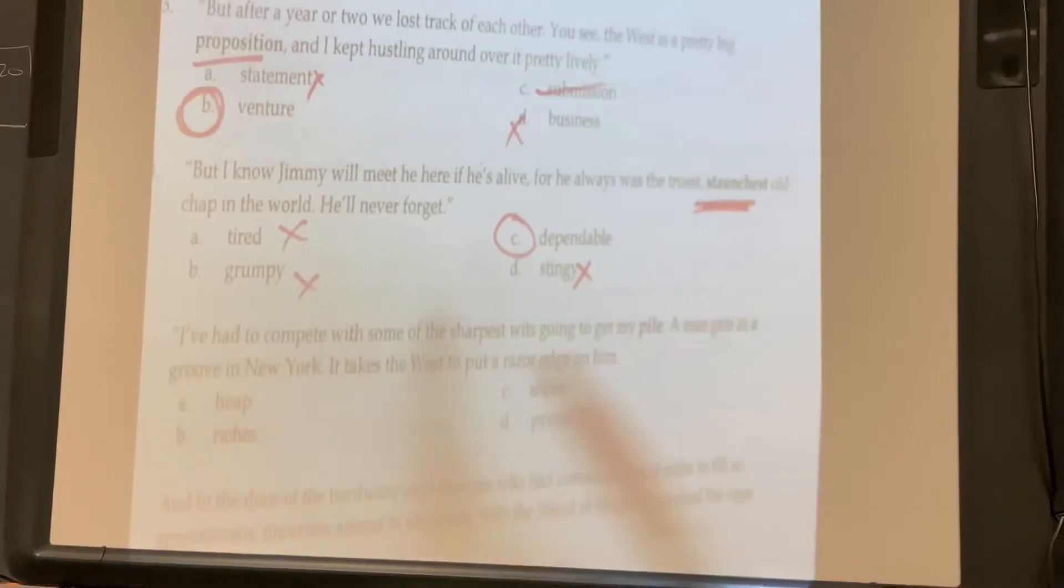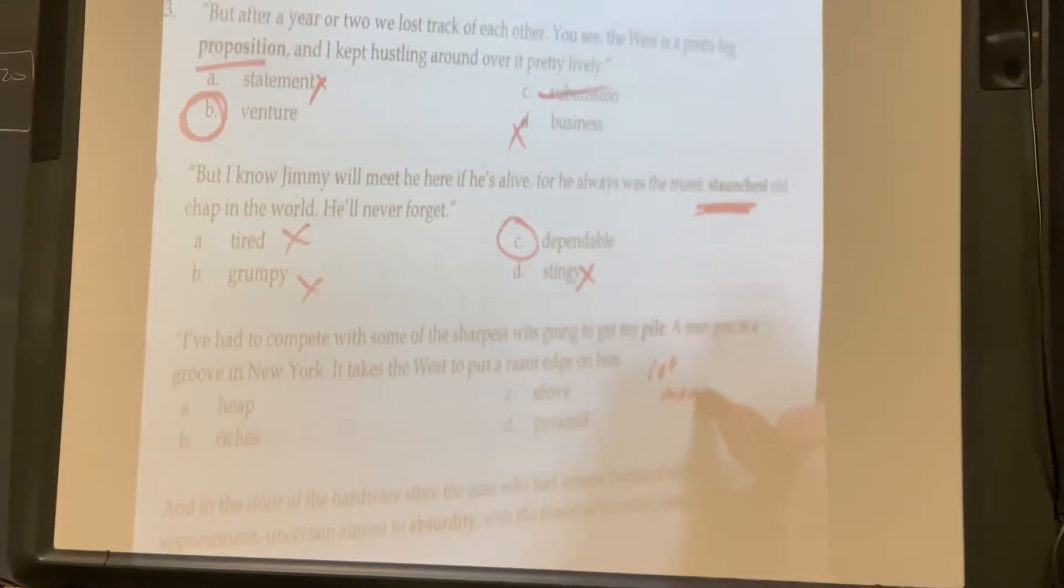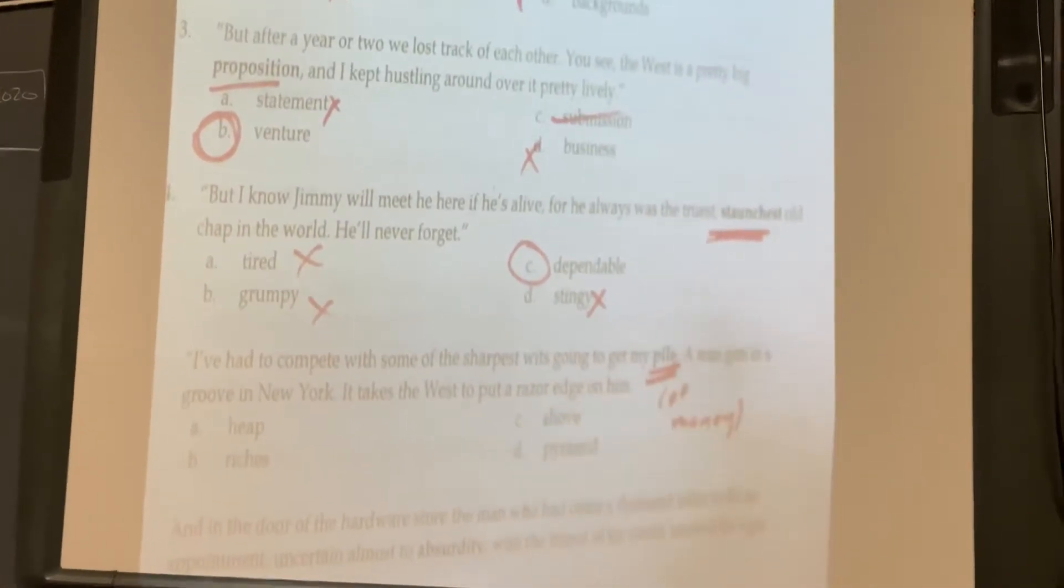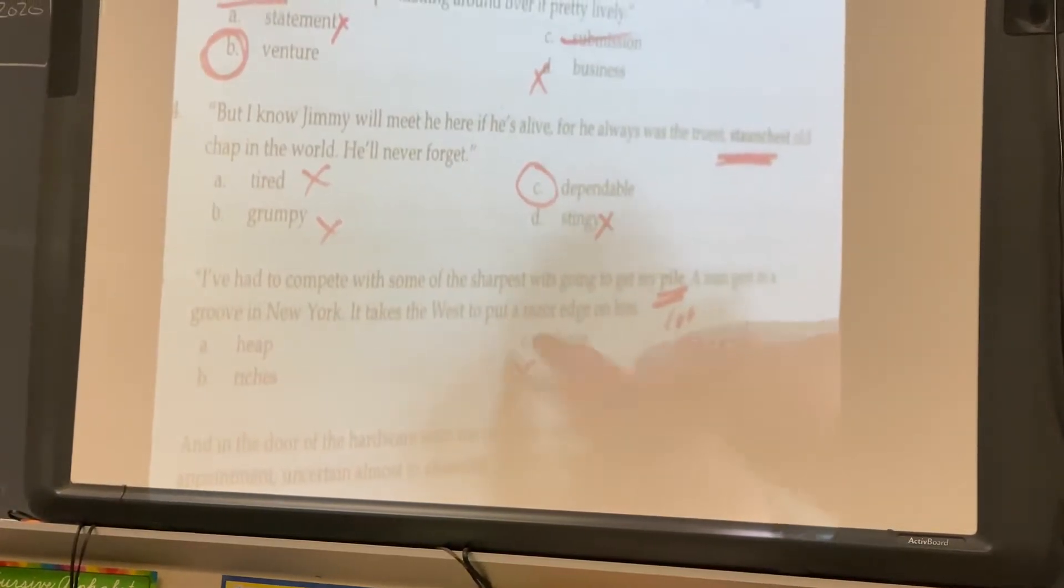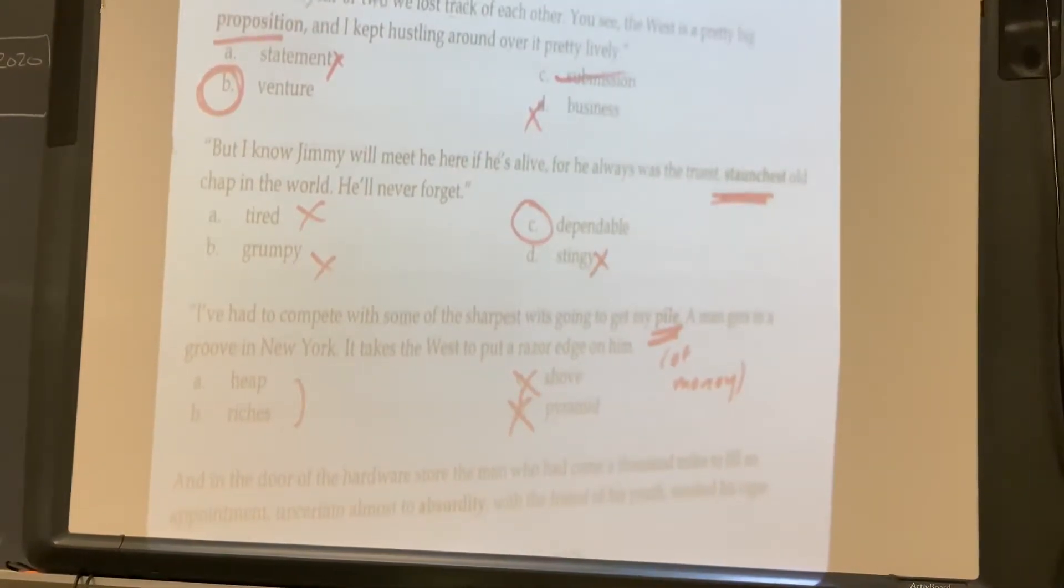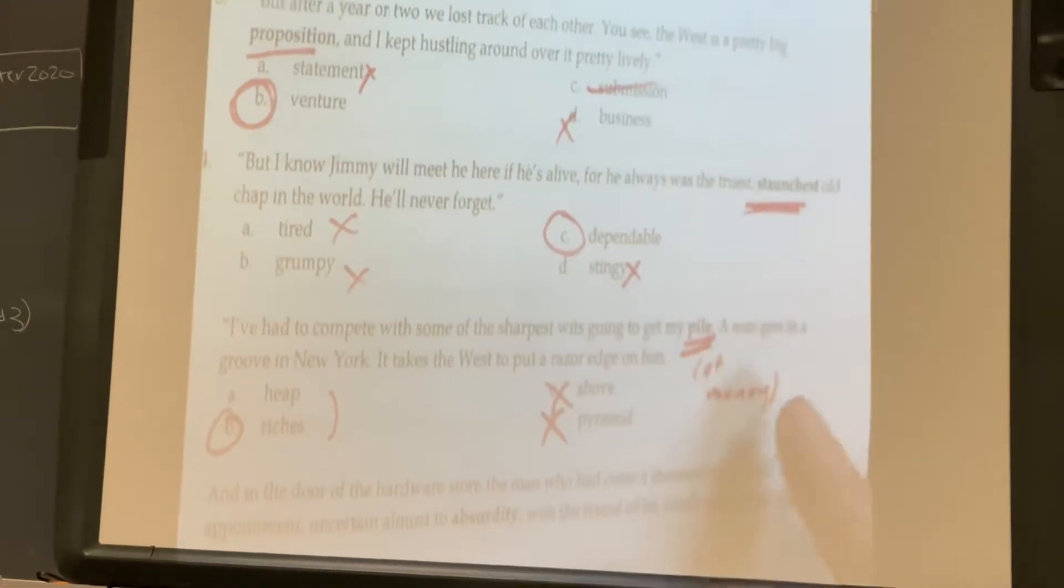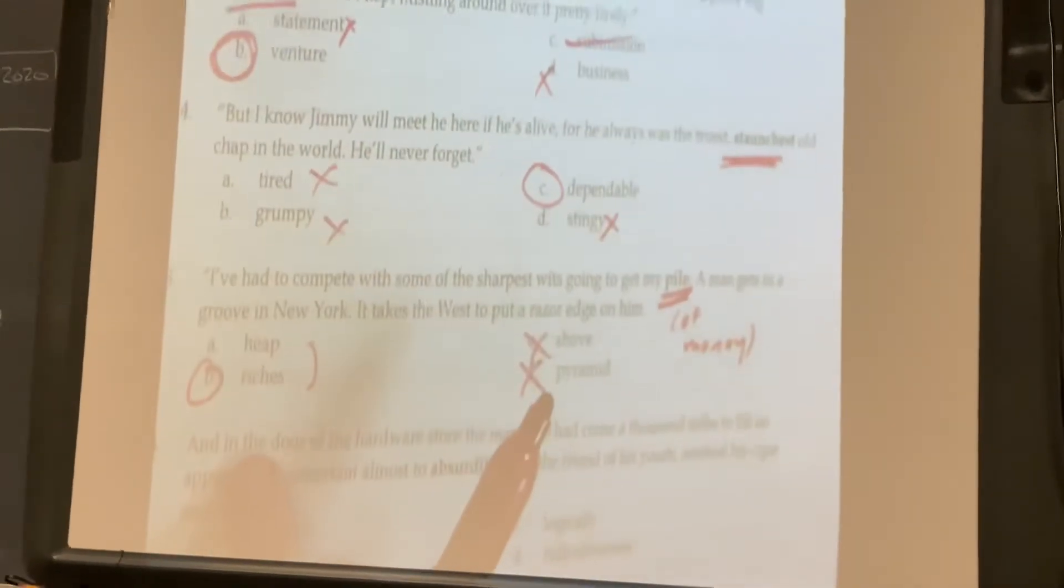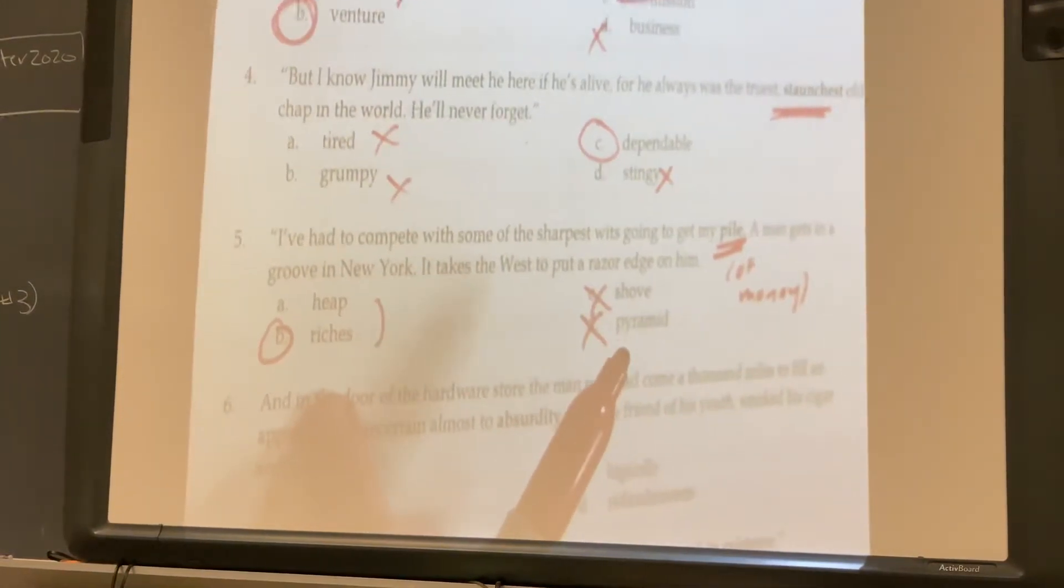Five: I've had to compete with some of the sharpest wits going to get my pile. So I'm thinking pile of money. A man gets in a rut in New York. It takes the West to put a razor edge on him. So I'm looking for the meaning of pile. I'm not going to say it's not pyramid, it's not shovel. I'm torn between heap and riches. I'm going to go with B because the meaning is riches. A pile could be any kind of pile, but I think the meaning of the sentence, it means money and riches and valuables. So I am going to go B. I feel like it's my best choice.